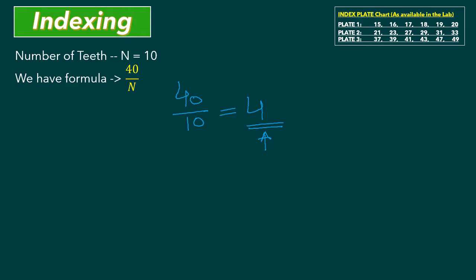If you are getting a whole number with no decimal point, we will not do any second step — the indexing is finished. The answer is 4 complete rotations. So if you have number of teeth 10, you will cut the first tooth, then rotate the crank four complete times, then cut the second tooth. You repeat this until you get all 10 teeth. The second step will be explained in the next slide.